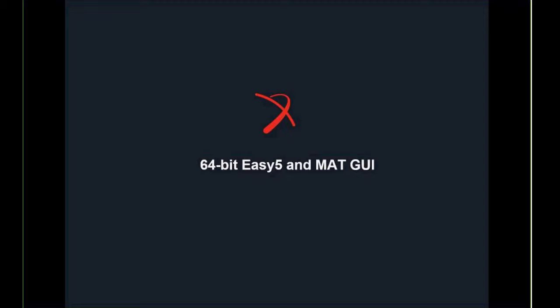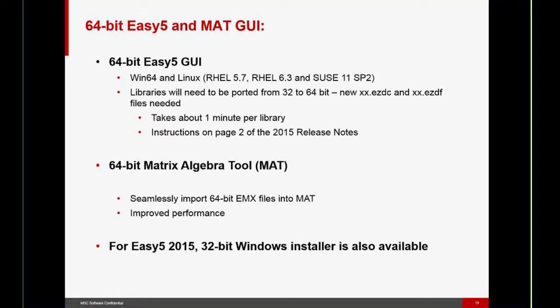Next, I'll briefly talk about the 64-bit GUIs, which are available with EZ5 2015. Now, in previous versions of EZ5, even though you could create 64-bit model executables or export 64-bit DLLs from EZ5, the GUI itself was 32-bit. With EZ5 2015, you now have 64-bit GUIs available for Windows 64 and three Linux platforms, Red Hat 5.7, Red Hat 6.3, and SUSE 11 Service Pack 2. These are full 64-bit implementations.